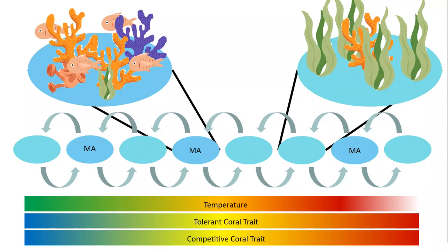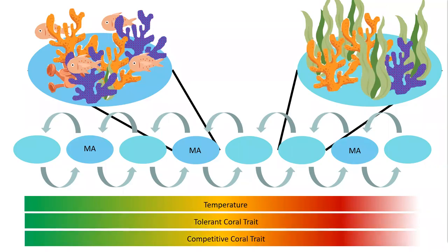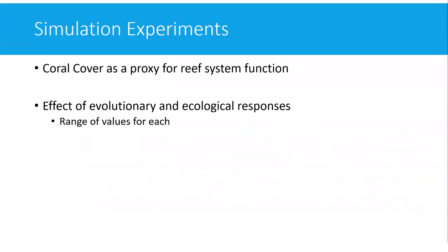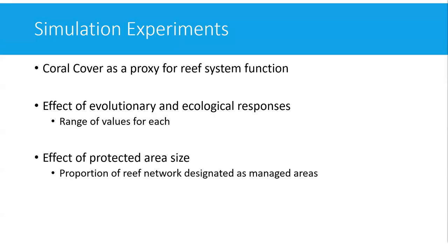We varied the number of managed areas across different scenarios. In the long run, as populations in managed areas increase in coral cover, those corals can spill out through larval dispersal and provide benefits to neighboring unmanaged reefs. We used coral cover as a proxy for reef system function, and explored both evolutionary and ecological responses — genetic adaptation and dispersal — across a range of values, as well as the effect of protected area size.